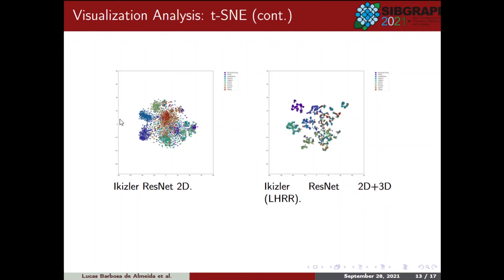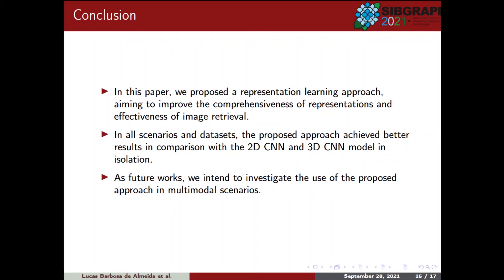In this paper, we propose a representation learning approach aiming to improve the comprehensiveness of representations used to achieve more effective results on image retrieval tasks. In the experimental evaluation, our approach achieves significant effectiveness gains on retrieval tasks conducted on action recognition datasets, achieving better results in comparison with the 2D and 3D-CNN models in isolation. Our results are promising for representation learning, and as future work, we intend to investigate the use of the proposed approach in multimodal scenarios, aiming to fuse information from multiple modalities and supervising multimedia retrieval scenarios.